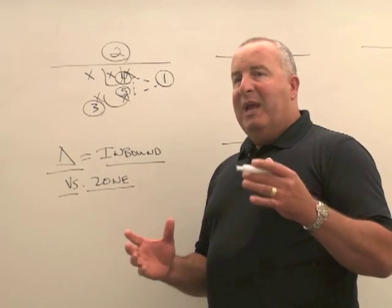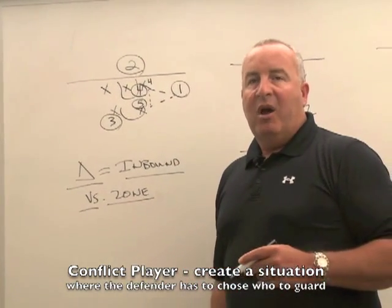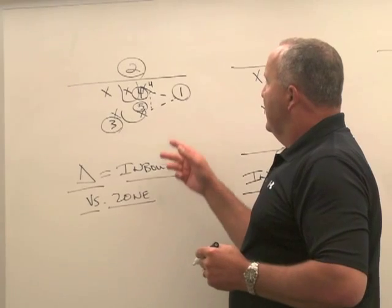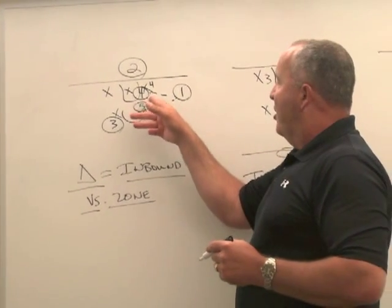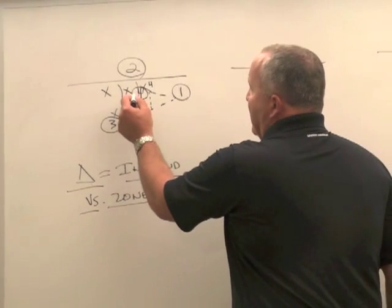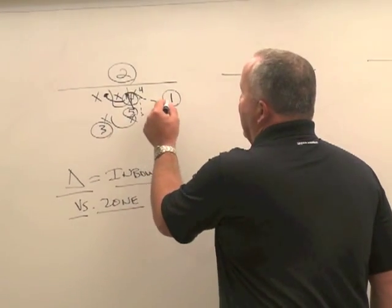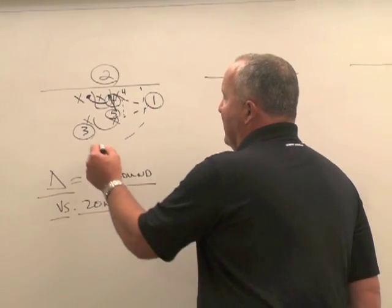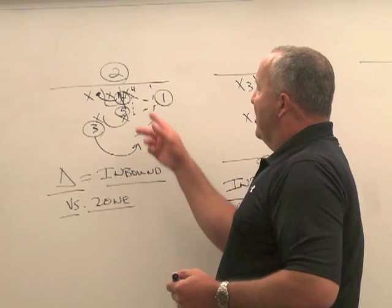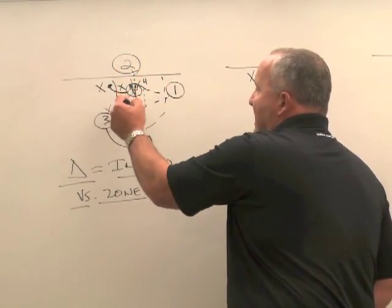The main concept of this play is to take X4 defensively and make him our conflict player. So we teach our offensive player 2 to read X4's alignment. His current alignment right now is outside of our offensive 4. If he's outside of our offensive 4, we clear our 4 across to the opposite block, fill our 5 to replace our 4 at the near block, keep our 1 at 3-point line extended along the baseline, and take our 3 over the top as a safety valve. If the conflict player is outside of our 4, the read for our 2 is to dump the ball right into the 5 on a lob — that's our first read.